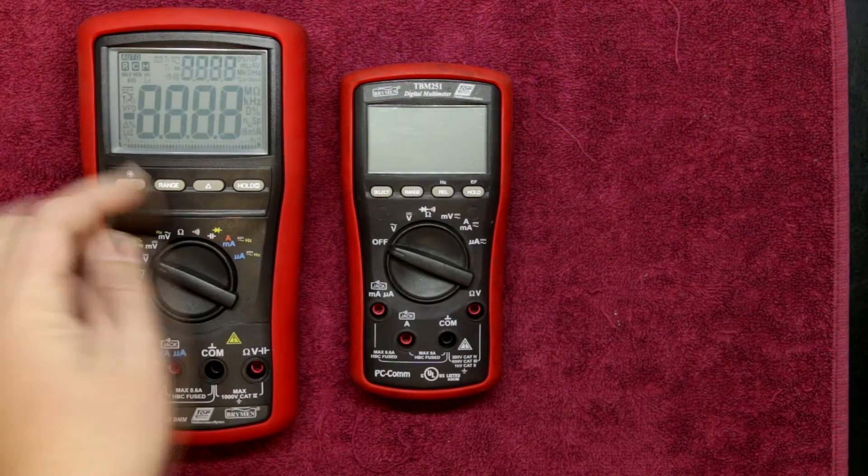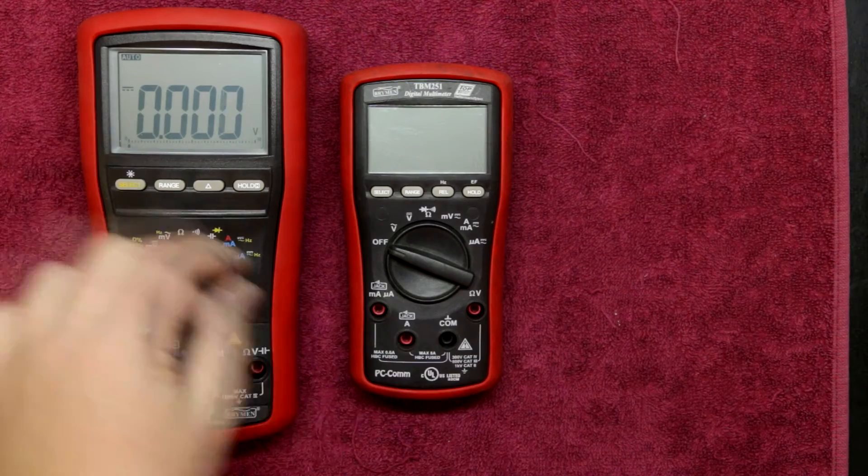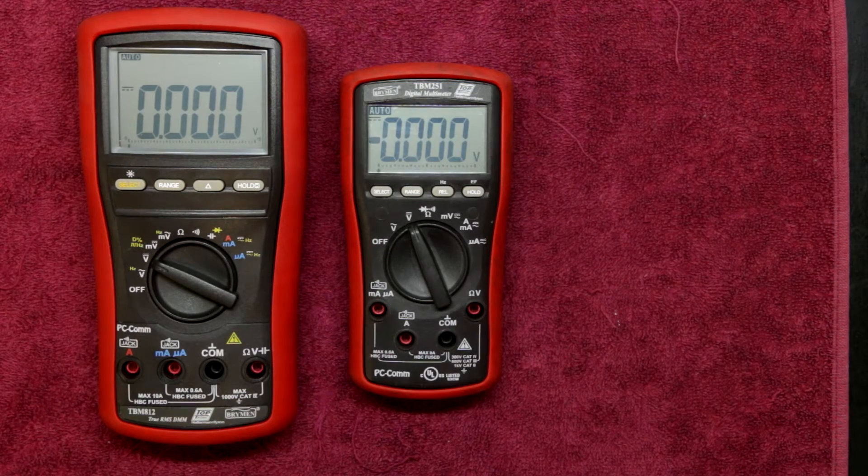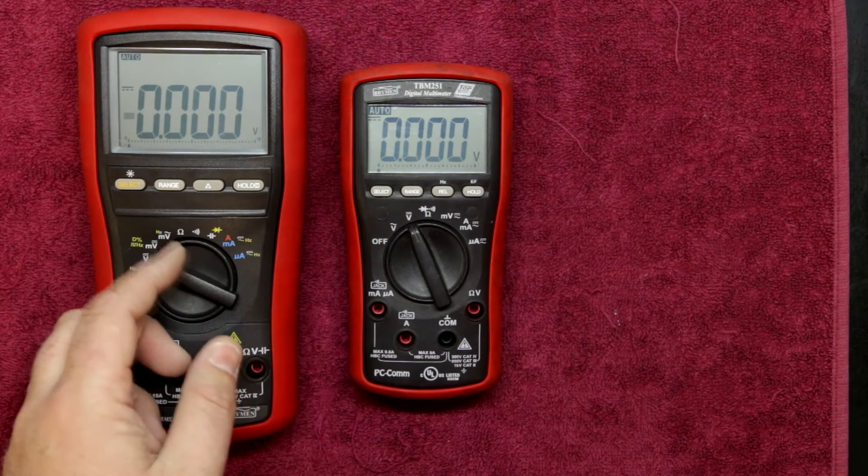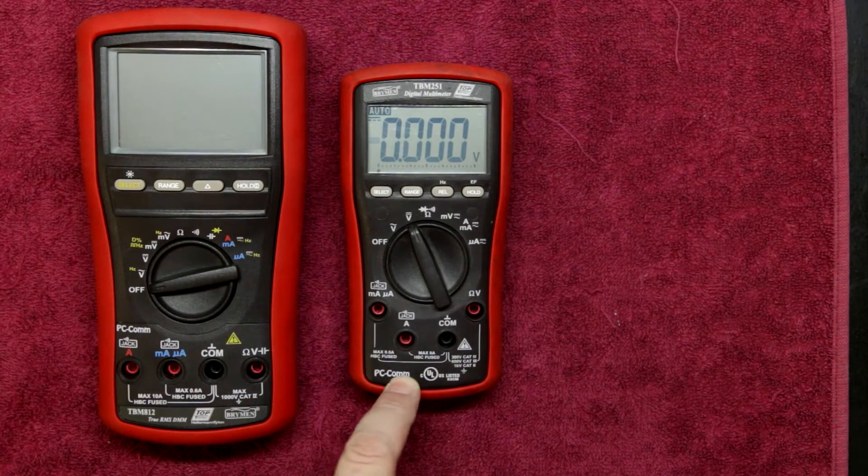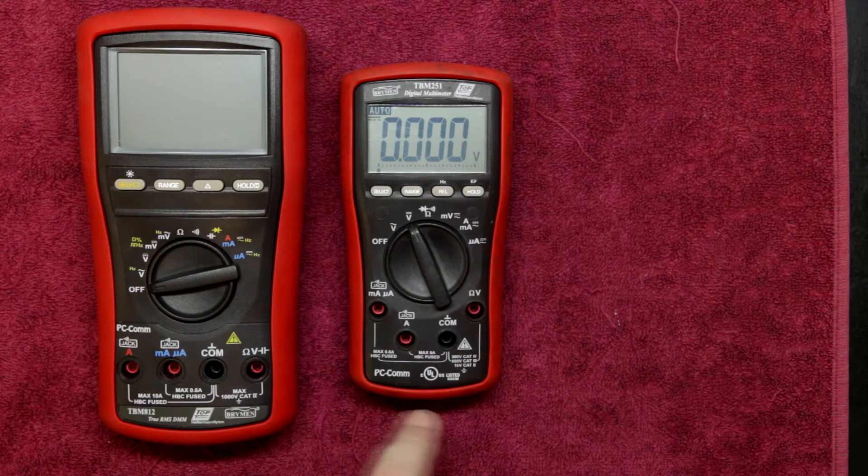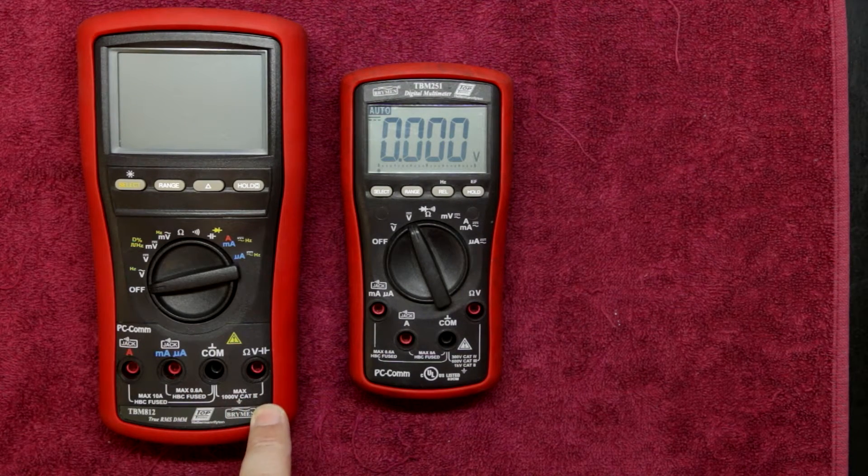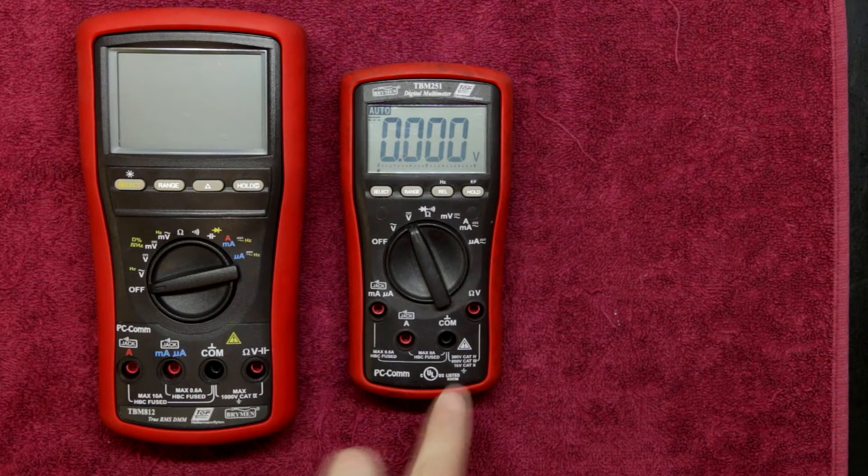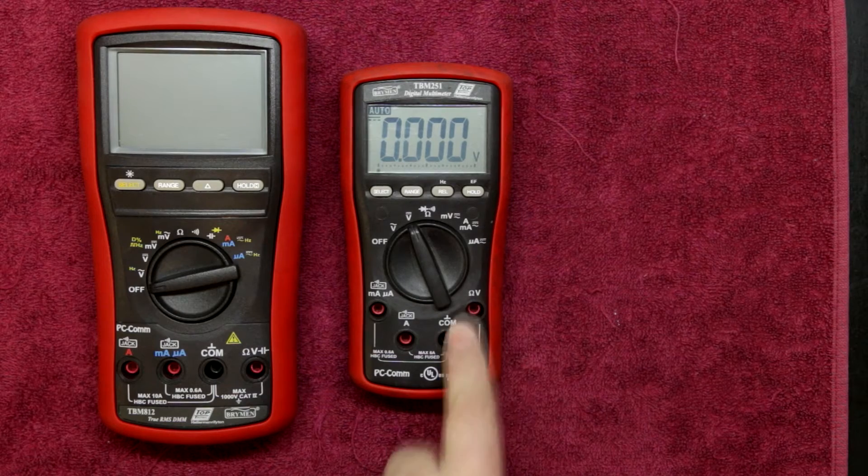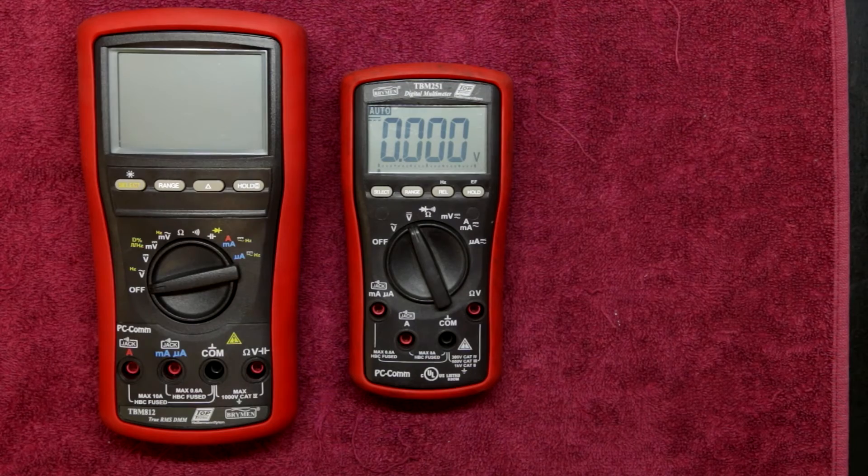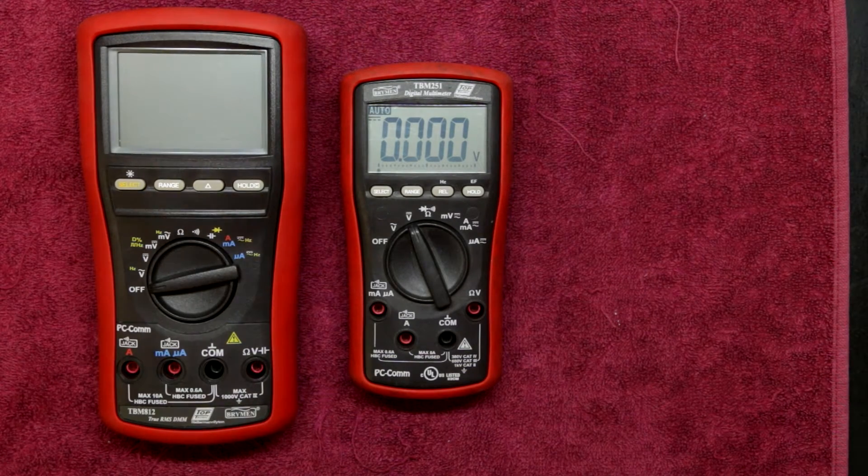Another thing to note is the eight series have the dual display whereas these two series meters have a single display. So there's no displaying two bits of information at a time. Now the 251 from what I see has a very similar sort of rating but not as highly rated. These eight series meters are rated at 1000 volts CAT4 on volts. Now you'll have 600 volts CAT3 so that'll be on par with your sort of fluke entry level stuff and your basic fluke meters.